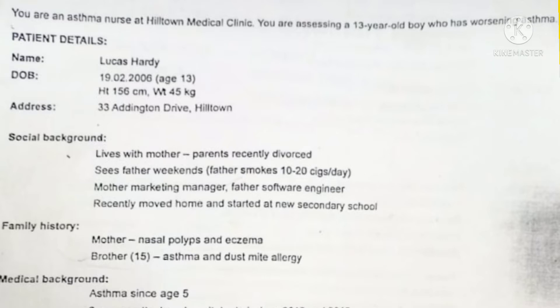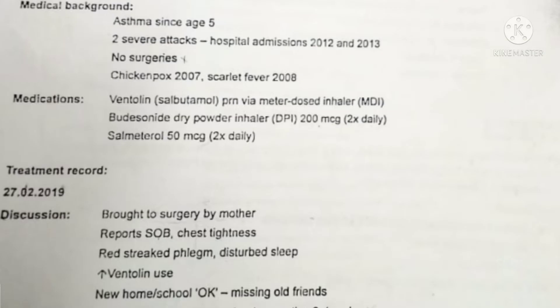He has had asthma since age 5, with two severe attacks and hospital admissions in 2012 and 2013. No surgeries. Chickenpox in 2007, scarlet fever in 2008. Medications are Ventolin and Budesonide. From here we note when the asthma attacks started and the hospitalization episodes. Surgery, chickenpox — no need to mention. Then the treatment: Ventolin we have to mention.